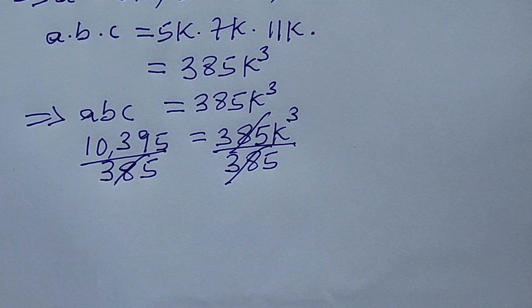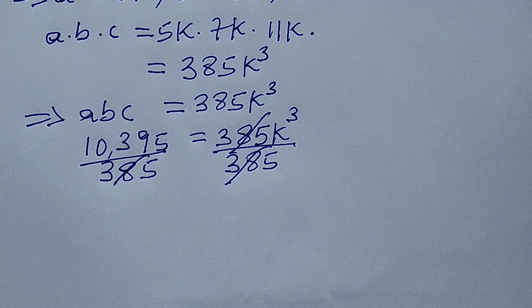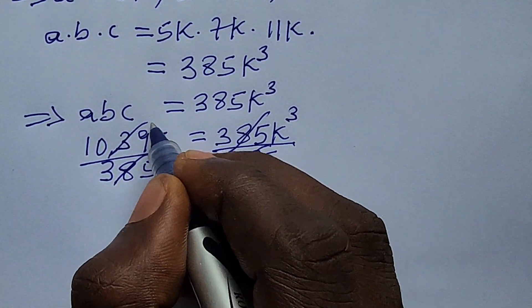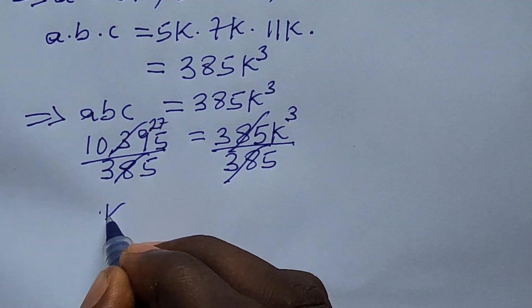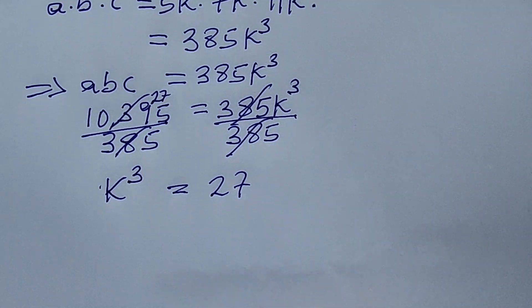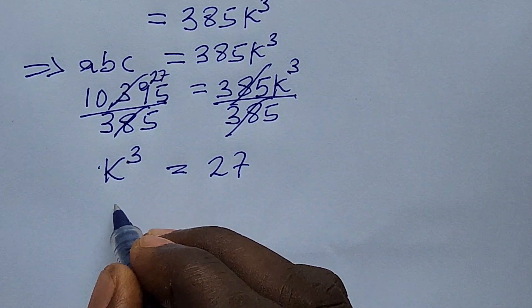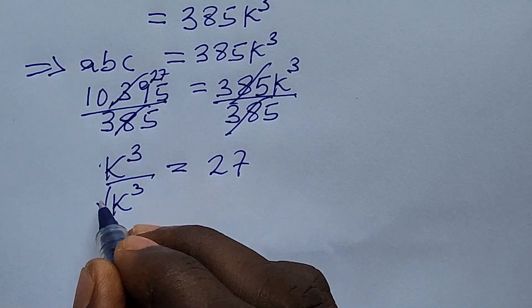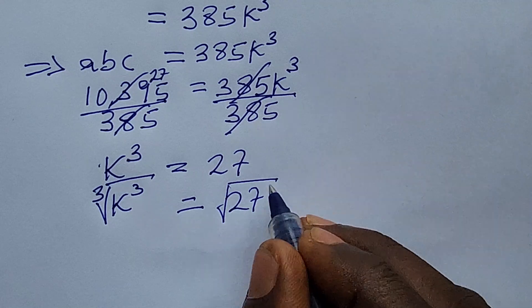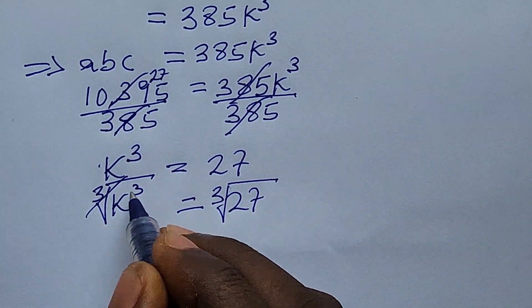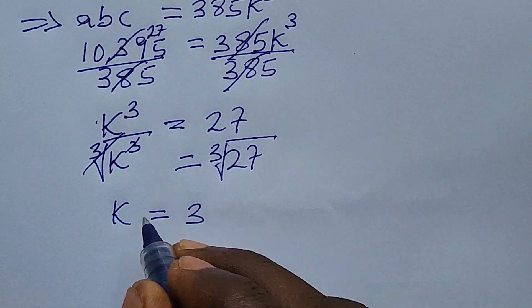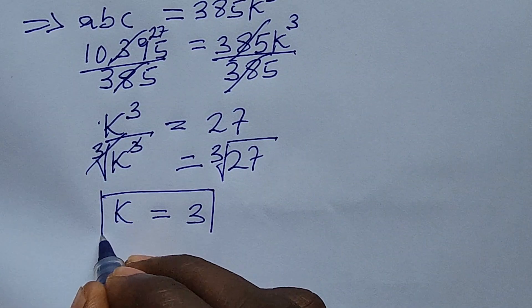When I have 10,395 divided by 385, this gives us 27. So when I have our k³ = 27. So since we are looking for k, we take the cube root of both sides. So we are now left with k = 3. So if we solve our k to be 3.